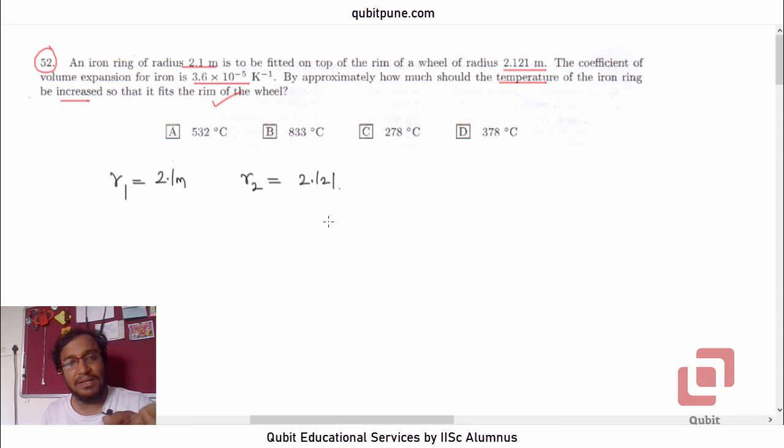We are not given the thickness of the ring. We don't know how thick it is. But let's take actually benefit of that to simplify our situation. The coefficient of volume expansion for iron is 3.6 into 10 raised to negative 5 per Kelvin. So that's gamma, 3.6 into 10 raised to negative 5 per Kelvin. So we need to determine delta T. In our usual notation, we need to determine delta T.